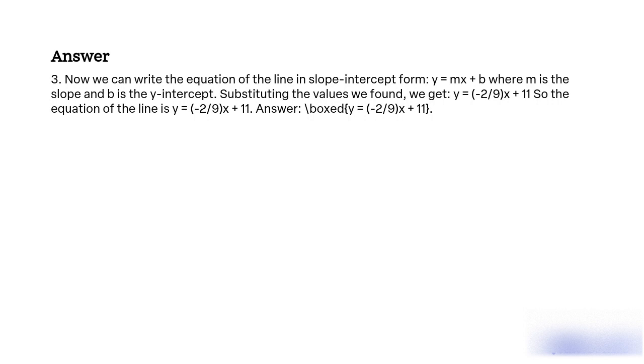3. Now we can write the equation of the line in slope-intercept form: y = mx + b where m is the slope and b is the y-intercept. Substituting the values we found, we get y = (-2/9)x + 11. So the equation of the line is y = (-2/9)x + 11. Answer: y = (-2/9)x + 11.